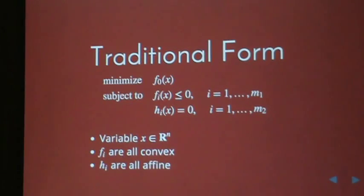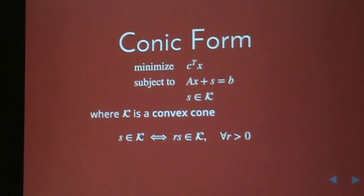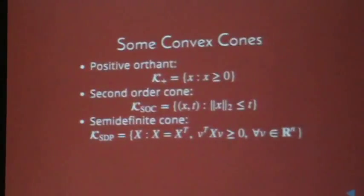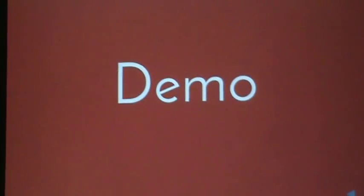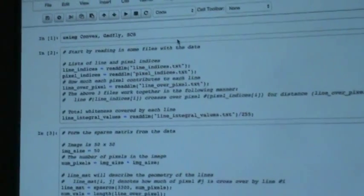So what Convex.jl essentially does is it takes a problem that's very similar to the traditional form - you can express your problems in traditional form - and we'll convert it to this much uglier conic form and pass it off to the solvers. So to give you a better idea of how all this works, we have a demo of a couple applications: one on tomography, sadly not quantum tomography, and one on time series.